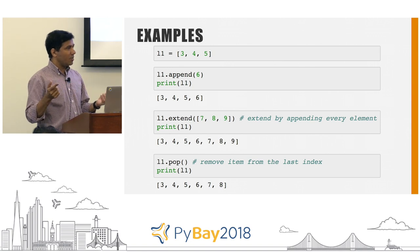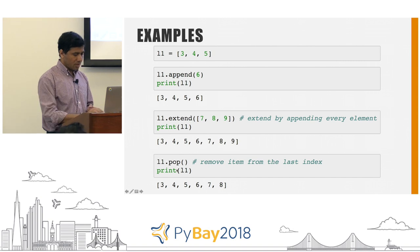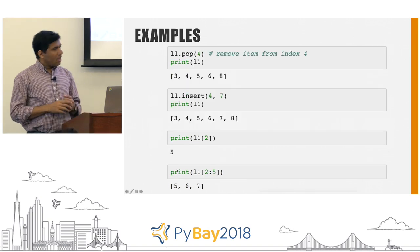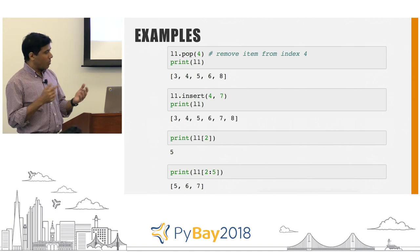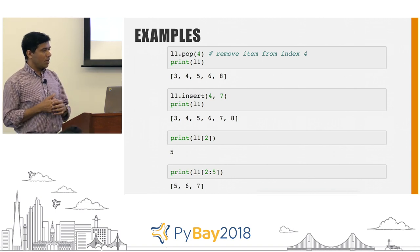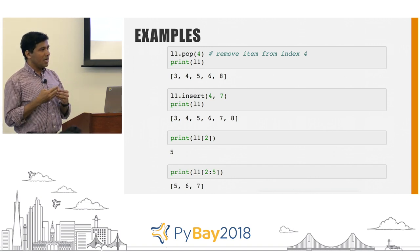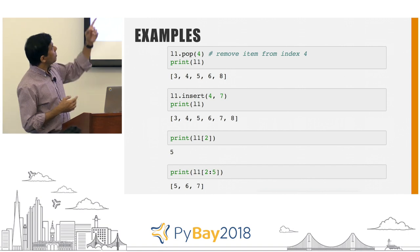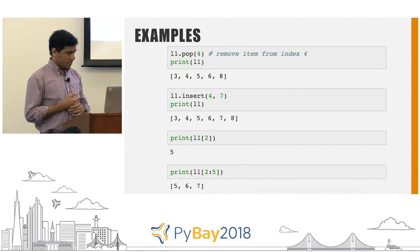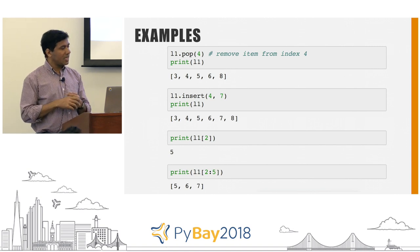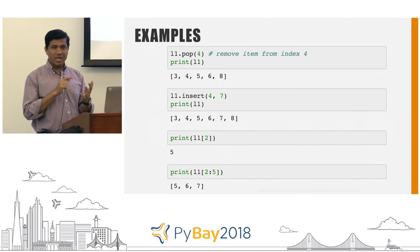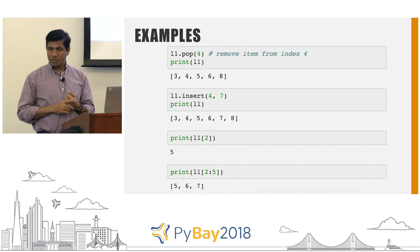Pop removes the last element from the list — pop with no input will remove the last element. But if I want to pop an element at a specific index, I can say L1.pop(4), which removes the element at index number 4 — in this example, number 7. Similarly, you can insert an element to a specific position: L1.insert(4, 7) means add element 7 at index 4.